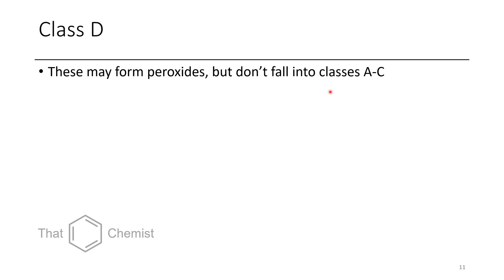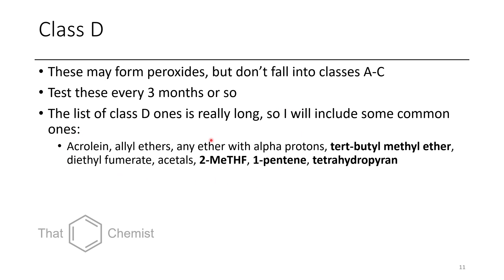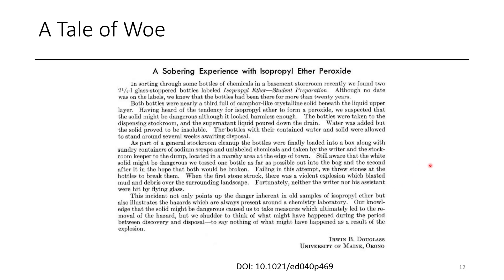Class D chemicals usually have had some documented instance of peroxide formation, but they aren't common enough to be a major concern for most people most of the time. Once they've been opened, you should test them every three months or so. Common Class D examples include acetylene, allyl ethers, any ether with alpha protons, and tert-butyl methyl ether — notably, the methyl group of tert-butyl methyl ether still has three weak C-H bonds. Others include diethyl fumarate, acetals, 2-methyl-THF, 1-pentene, and THP. There are many others, but these are the main ones.